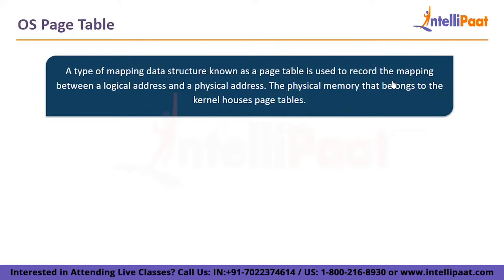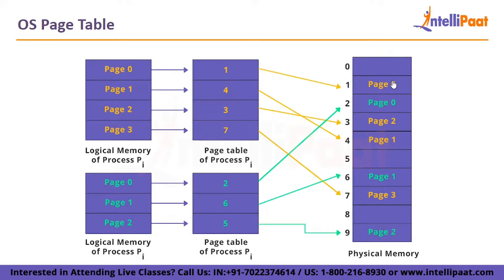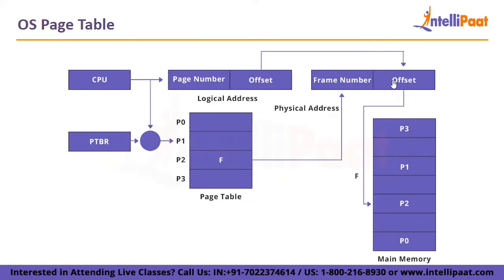A page table is a mapping data structure used to record the mapping between a logical address and a physical address. It is housed in the kernel's physical memory. Each page's base address is contained in the page table, and the physical memory address is obtained by combining this base address with the page offset. The operating system controls the page table using a processor register called the Page Table Base Register (PTBR), which stores the page table's base address. A key issue with paging is that determining the physical address from the logical address takes significant time, so we employ a unique form of cache memory called TLB.